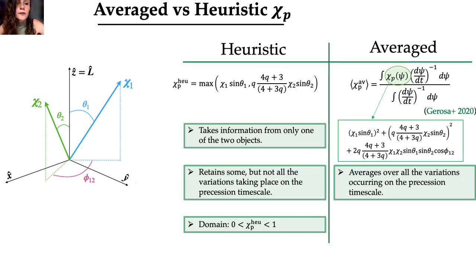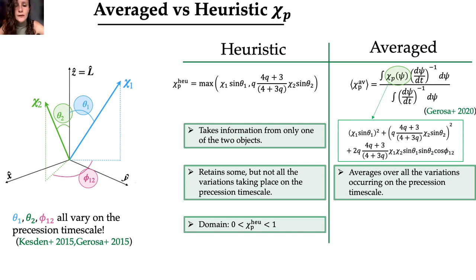From now on, we will call this definition the heuristic χp, which shows some intrinsic problems, because it takes information from only one of the two objects that compose the binary systems, since it represents the projection onto the orbital plane of just the larger spin. In second place, there are three angles that vary during the precession timescale, θ1, θ2, and φ1-2. φ1-2 is the azimuthal angle between the projection of the two spins onto the orbital plane, and the heuristic χp averaged over φ1-2, but retained at the same time the dependence on θ1 and θ2.